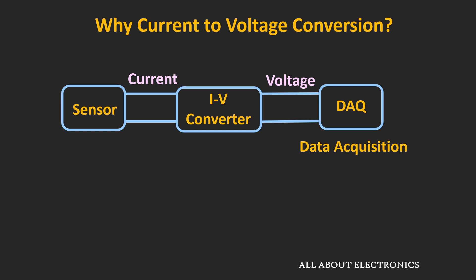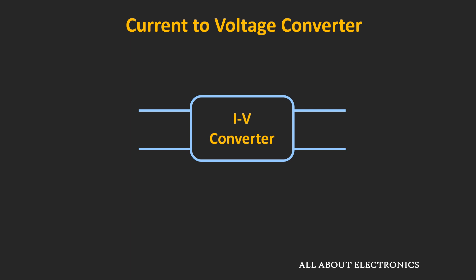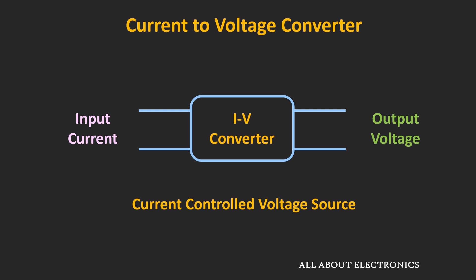This current-to-voltage converter is also an example of a current-controlled voltage source. Because if you observe, the input to this circuit is in terms of current, while the output is in terms of voltage. So just by controlling the input current, we can control the output voltage.